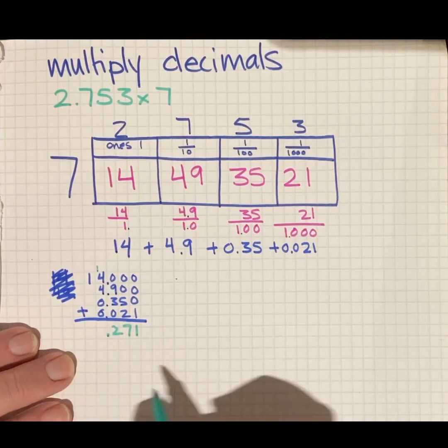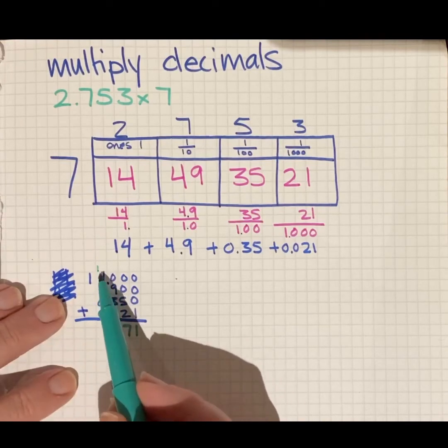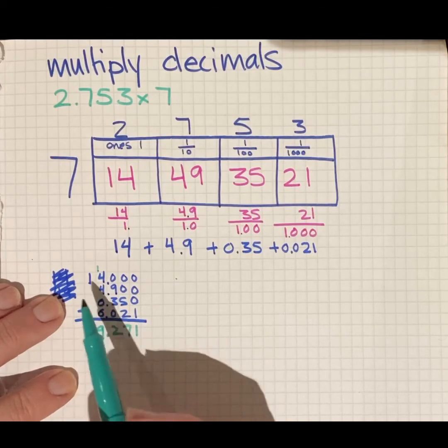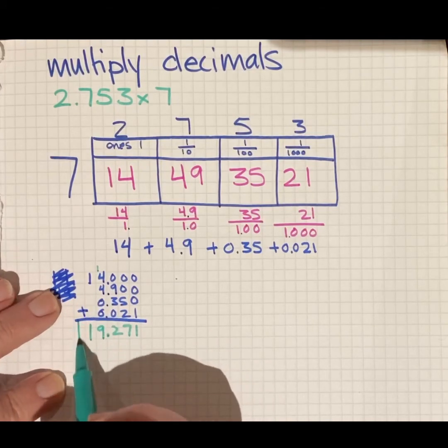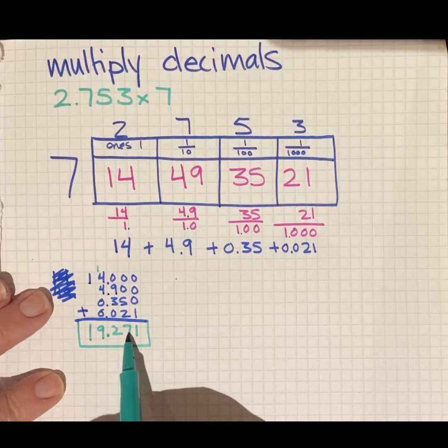Next, I make sure I put my decimal place in. Got to do the next column, don't I? So then 1 plus 4 is 5 plus another 4 is 9. 9 plus 1 gives me 19.271. 19 ones, two tenths, seven hundredths, and one thousandths.